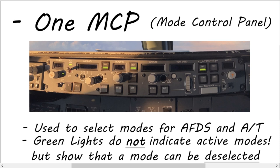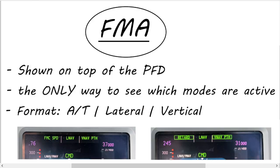Since you cannot see which modes are active by looking at the green lights, how can you actually see them? That is by looking at the FMA — the flight mode annunciator — shown on the top of the primary flight displays. The general format is: on the left side you have the autothrottle mode, in the middle the lateral mode, and on the right side the vertical mode. For example, if the autothrottle is in FMC speed, horizontal navigation is in LNAV, and vertical navigation is in VNAV Path. When a box is drawn around one of the FMAs, that indicates a newly engaged mode that became active in the last 10 seconds.